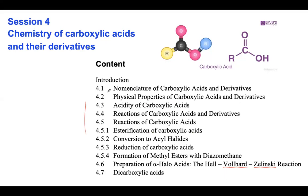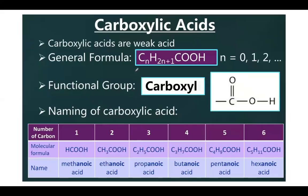Carboxylic acids are weak acids, and these are not new concepts since you've learned about them at level three. Carboxylic acids are composed with the carboxyl functional group — that is the main thing. You have to have this carboxyl functional group for a compound to be a carboxylic acid, and then you have an aliphatic part attached to this carboxyl functional group.